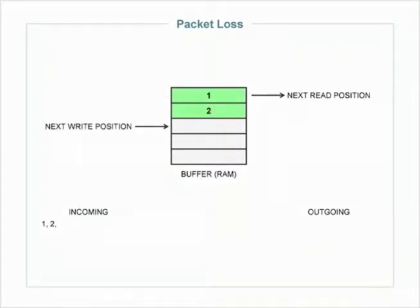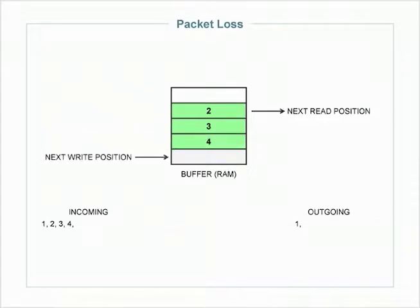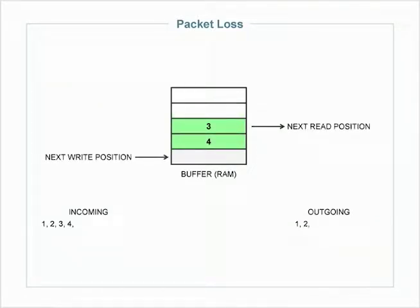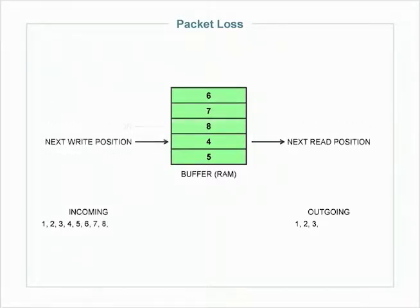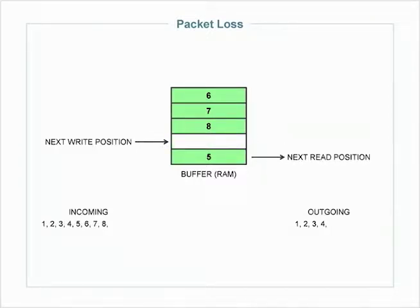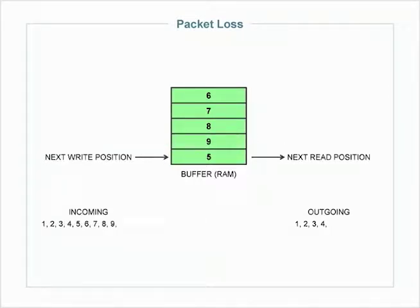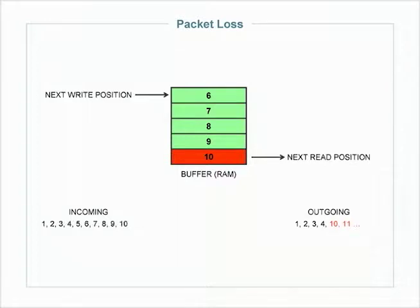If you follow along: we write chunk number 1 into the buffer, then number 2, then we read number 1 out, then we write 3 and 4, then read number 2, write 5 and 6, read number 3, write 7 and 8, read number 4, write number 9 and 10. And whoops — what happened to 5? That's the next one we want to read. Number 5 just got overwritten in that physical piece of memory by number 10. When it gets overwritten like that — poof, gone, never to be heard from ever again.